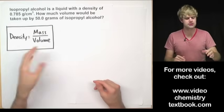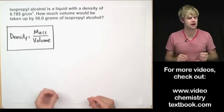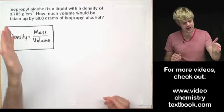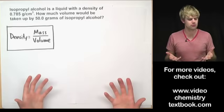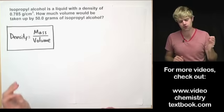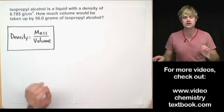Okay, one more. Isopropyl alcohol is a liquid with a density of 0.785 grams per cubic centimeter. How much volume would be taken up by 50.0 grams of isopropyl alcohol?